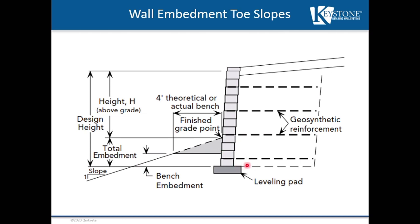When we're talking about embedment, we're talking about a measurement from the top of the leveling pad to the ground line in front of the retaining wall. Height in our discussion will be the exposed height of the retaining wall, from that ground line to the top of the wall. Our design height or total wall height is the top of the leveling pad to the top of the retaining wall. For sloping conditions, we've put in a four-foot theoretical bench. Embedment protects the base of the retaining wall — we don't want erosion or scour to take away the base and undermine our wall facing and leveling pad, as that is a failure mechanism we're trying to avoid.